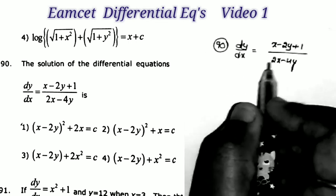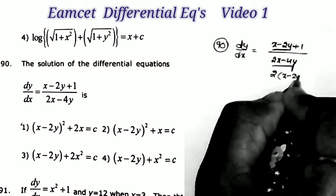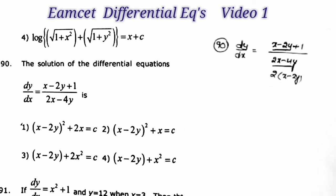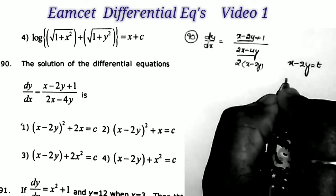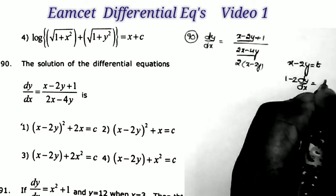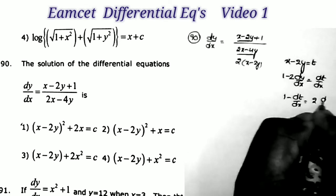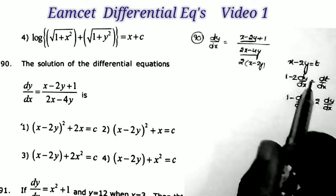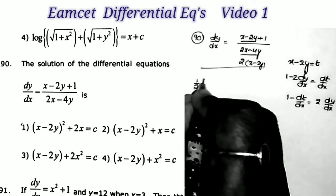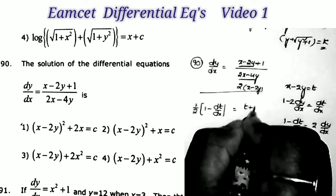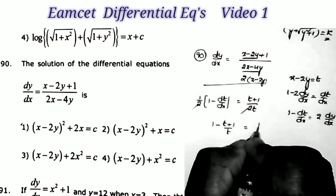Next question: the solution of dy/dx = (x−2y+1)/(2x−4y). Notice that the denominator 2x−4y = 2(x−2y), so both numerator and denominator share (x−2y). Let t = x−2y. Differentiating with respect to x: 1 − 2·dy/dx = dt/dx, so dy/dx = (1 − dt/dx)/2. Substituting into the equation: (1/2)(1 − dt/dx) = (t+1)/(2t).